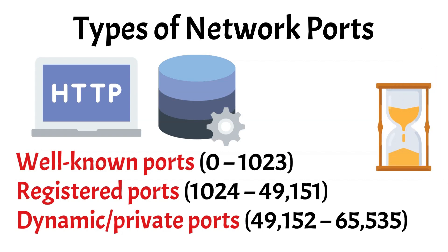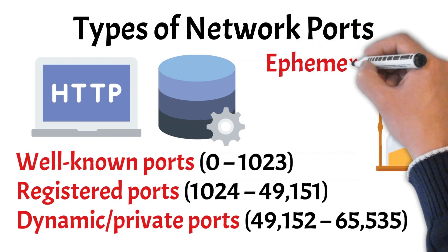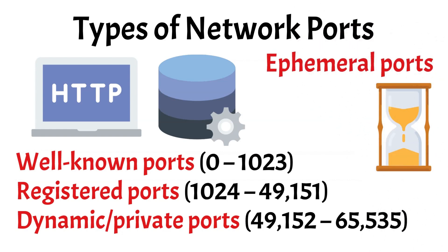Dynamic or private ports range from 49,152 to 65,535 and are temporarily assigned by operating systems for client-side communications. Within this range, ephemeral ports are short-lived and automatically chosen for outbound connections, like the source port 49,218 seen earlier.